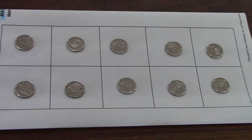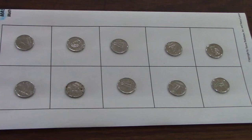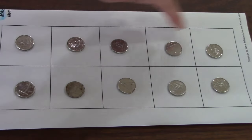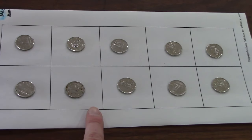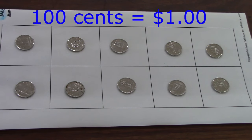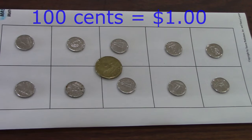On this ten frame, I have ten dimes. Ten dimes — what do dimes have to do with a dollar? If we have ten dimes, that would be equal to one dollar. Let's count: ten, twenty, thirty, forty, fifty, sixty, seventy, eighty, ninety, one hundred. We could trade in the one hundred cents from these dimes for one dollar. Ten dimes equal one dollar.